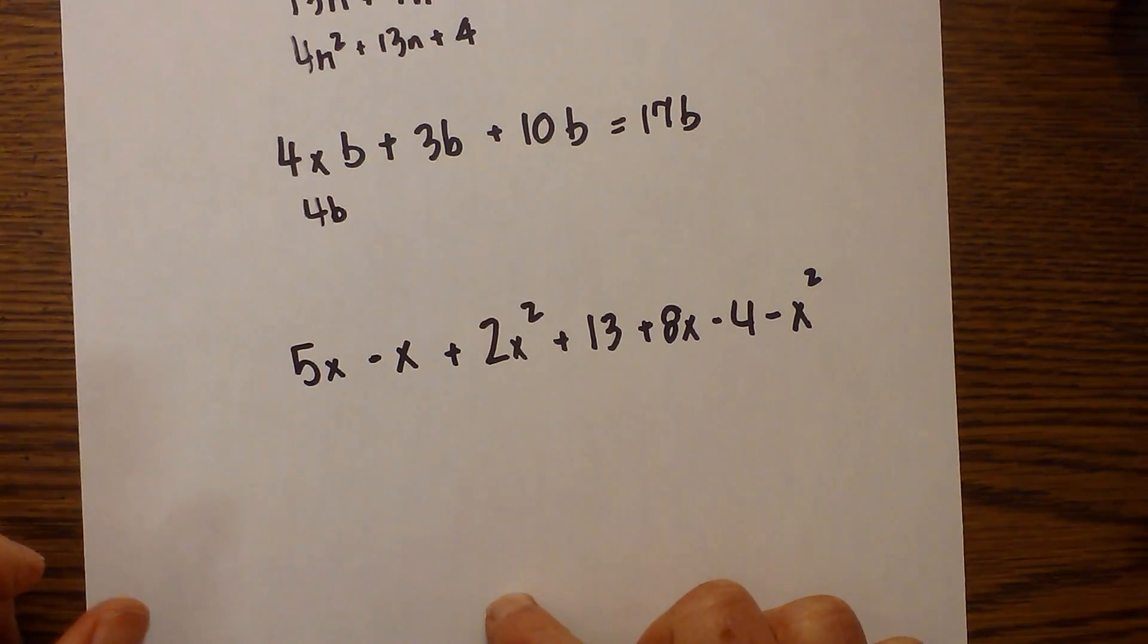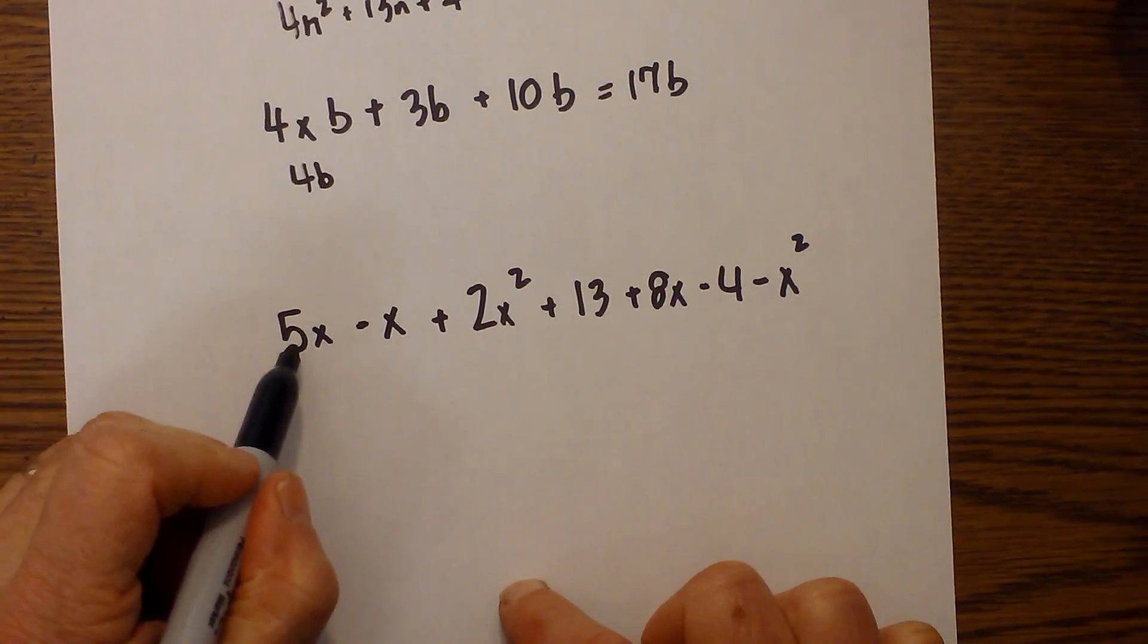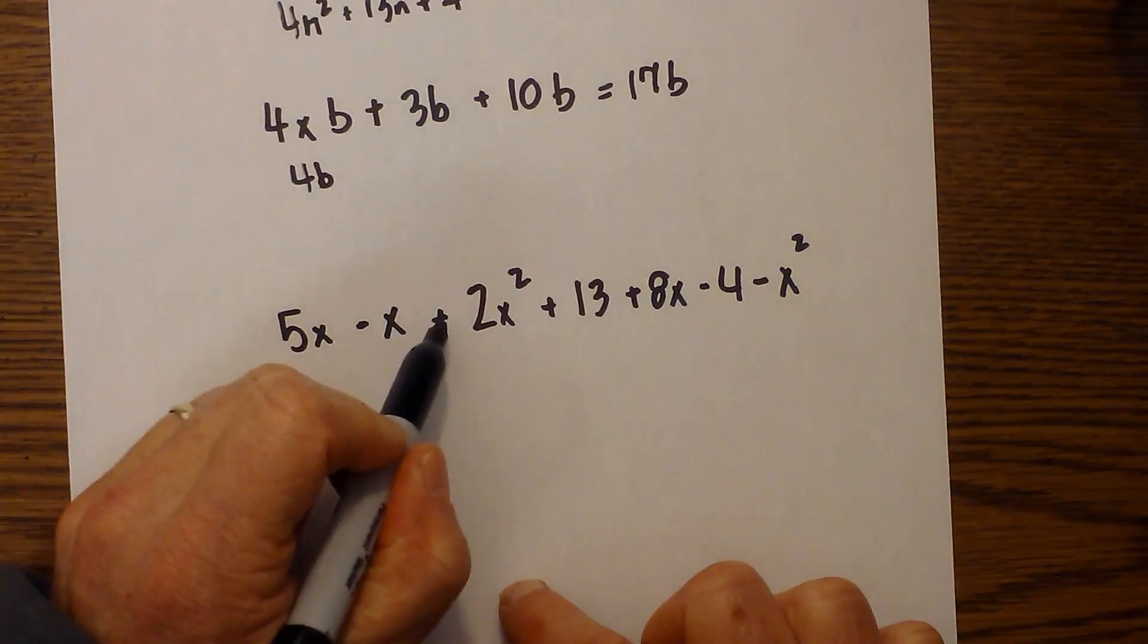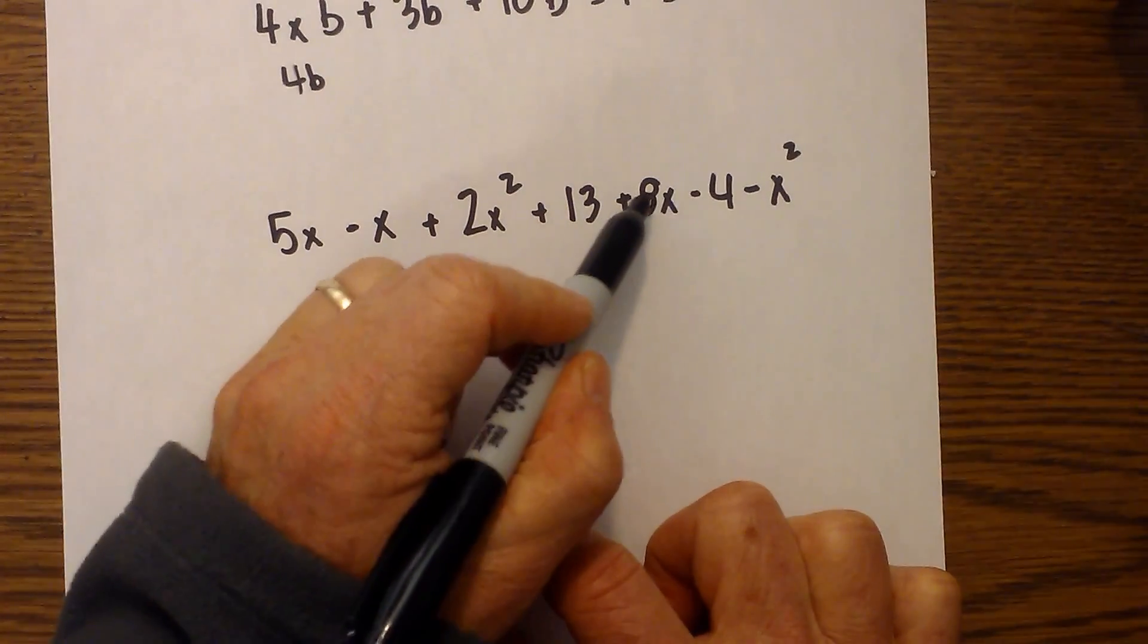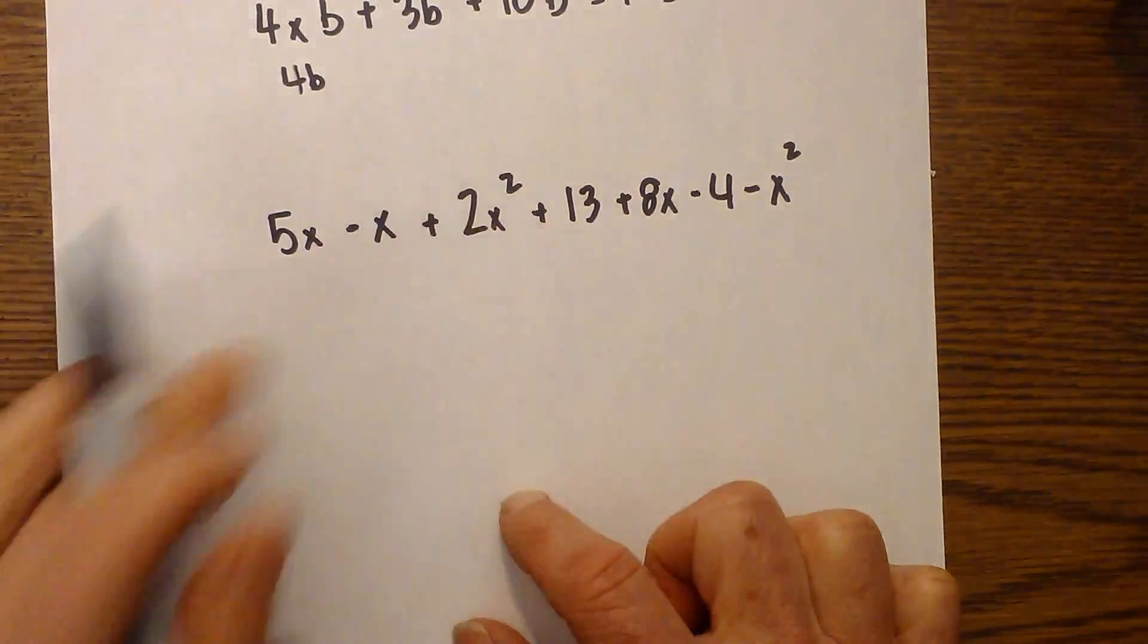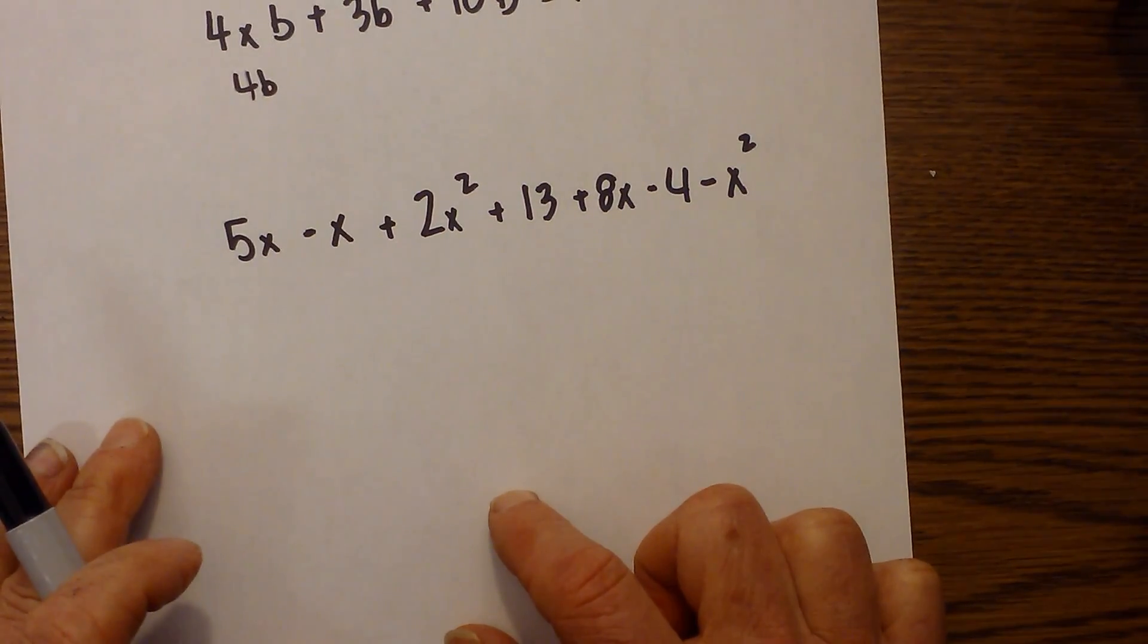And next, we have this one here. Here we have 5x minus x plus 2x squared plus 13 plus 8x minus 4 minus x squared. So we have a lot of numbers and variables and exponents in there.